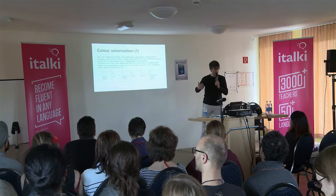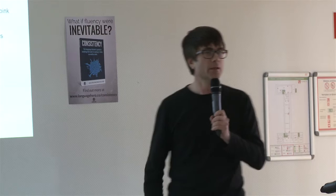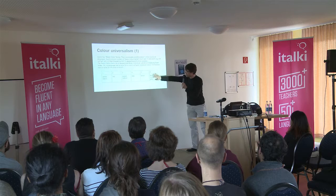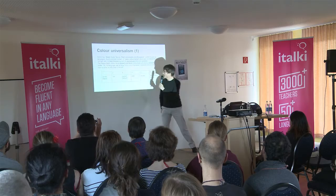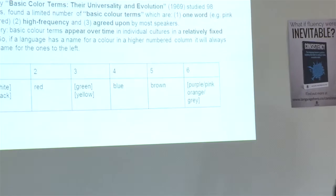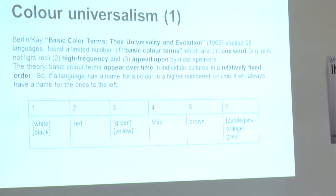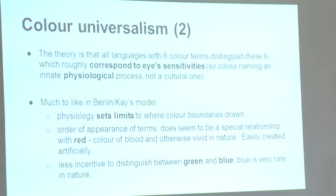After brown, in any order, come purple, pink, orange, or gray. The idea is that wherever you are on this scale, if you've got a word for blue in your language you'll also have all those earlier colors. If you've got a word for brown you'll also have blue, green, yellow, red, white, and pink. This picked up an old debate going since the middle of the 19th century and gave it new life in the final third of the 20th century.